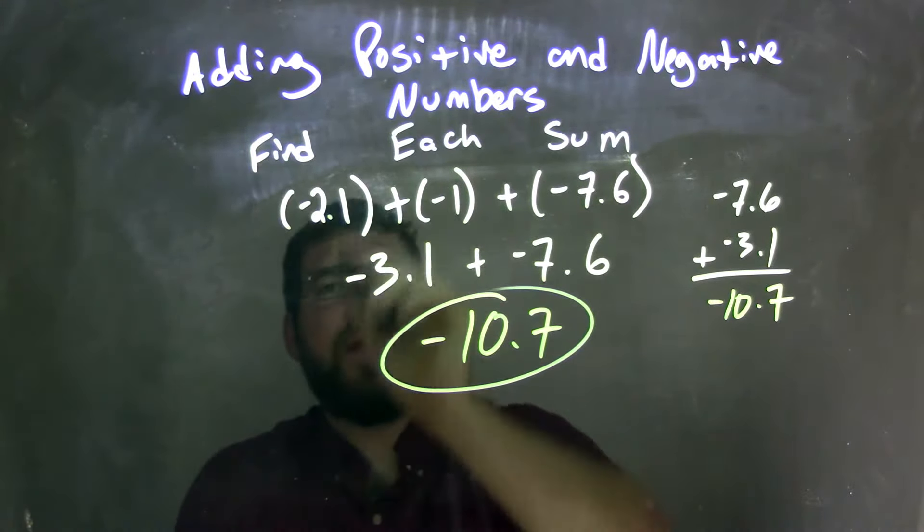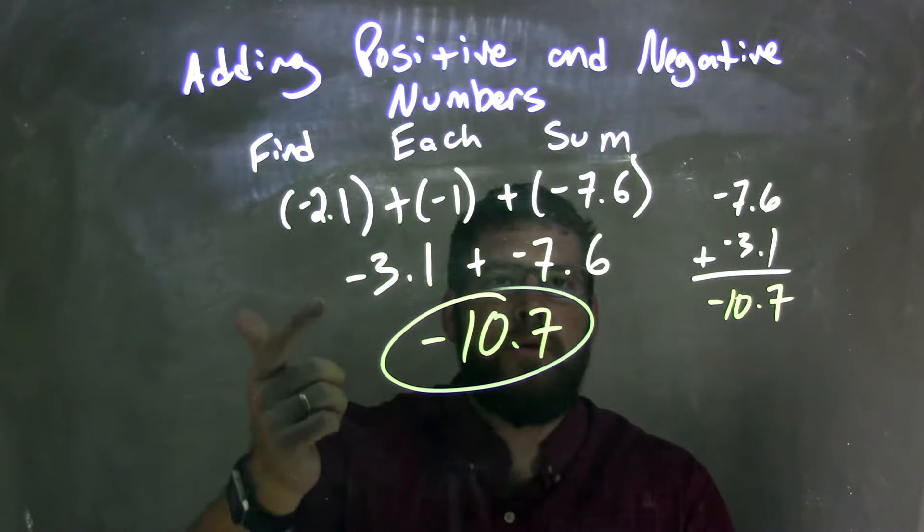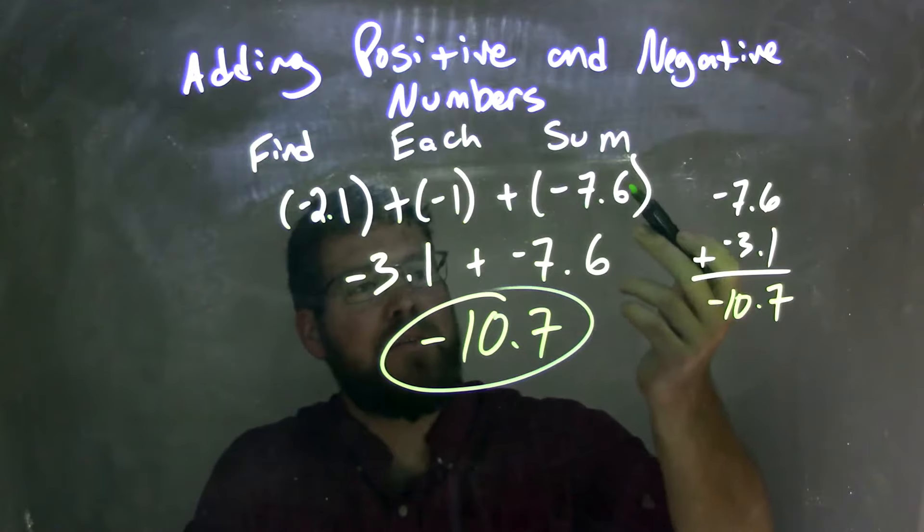So again, let's recap. We started with negative 2.1, and we added that to negative 1. That came out to be negative 3.1. We brought down the negative 7.6.